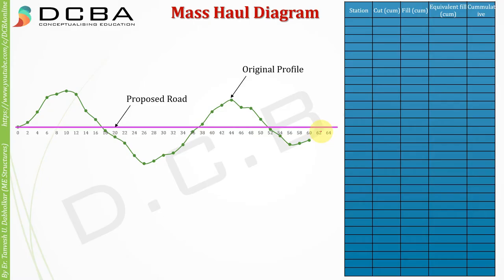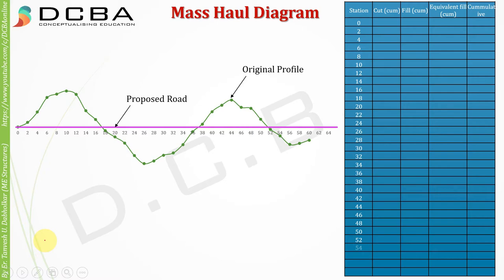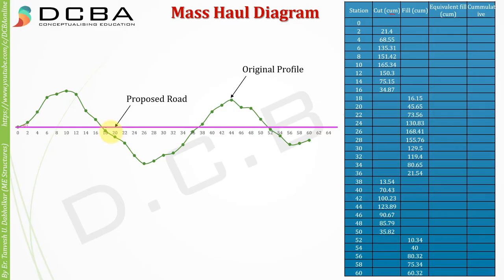So for the proposed road, this part I'll have to cut, this part I'll have to fill, again this part I'll have to cut, and this part I'll have to fill. To do this, let us first tabulate everything. We have our chainage — what we call a station — then we have cut. From zero to two, 21.4 cubic meters of soil needs to be cut. Somewhere in between we have fill, then again there is a cut and then a fill.